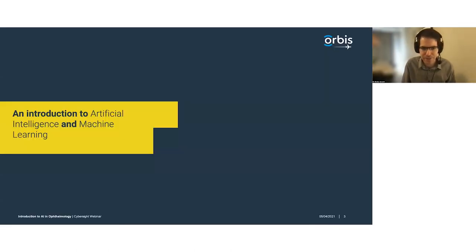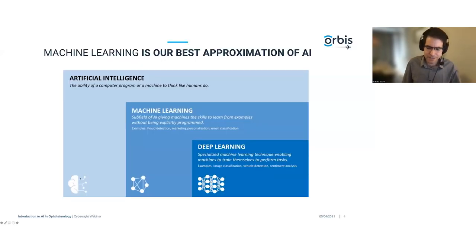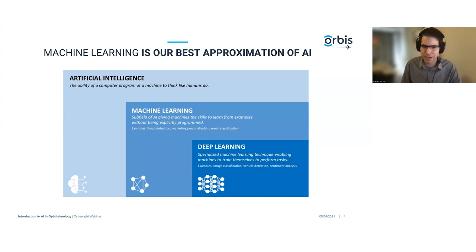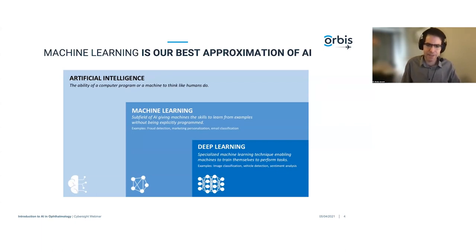Let's start with a brief introduction to artificial intelligence and machine learning. Artificial intelligence is defined as the ability of a computer program or machine to think like humans do — this remains science fiction as of yet, but we have a really good approximation called machine learning: the ability to give a machine the skill to learn from examples without being explicitly programmed to do so. A subset of machine learning is called deep learning, a technique that has seen a lot of success in recent years, and nowadays when we talk about AI we typically refer to a variation of deep learning.